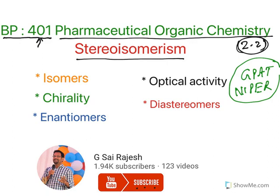Now in this video I am going to explain about what are isomers, what is chirality, what are enantiomers, what is optical activity, and what are diastereomers. So please pay attention to this video, which is a basic video that will give you a proper understanding about stereoisomerism.